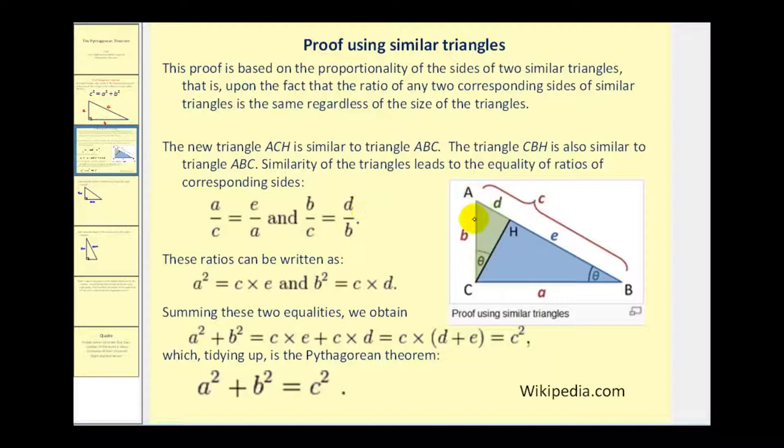And B is to C, where B is the length of the shortest leg of the largest right triangle, and C is the hypotenuse. And that must equal the ratio of D to B, where D is the length of the smallest leg of the smallest right triangle to its hypotenuse.